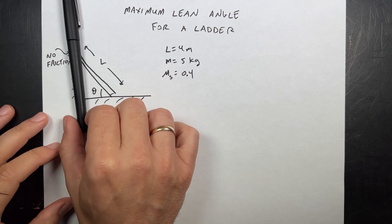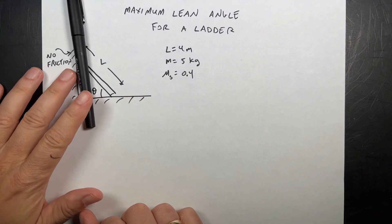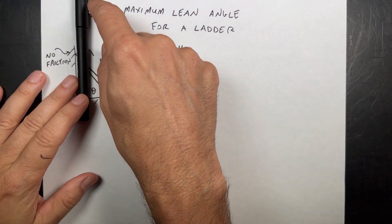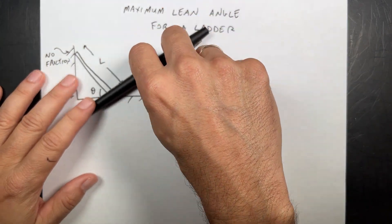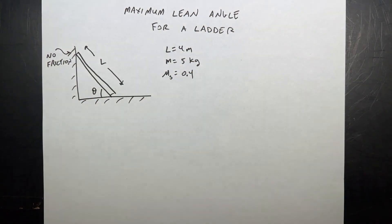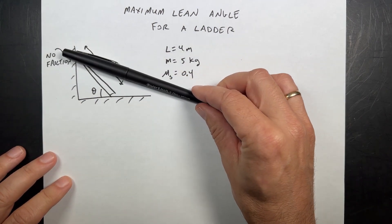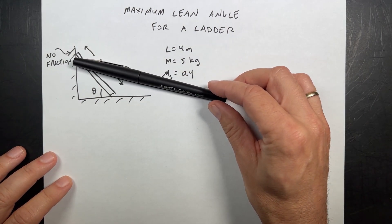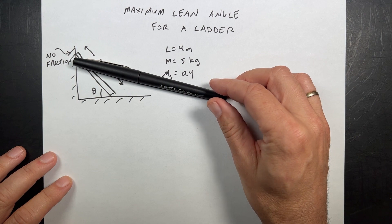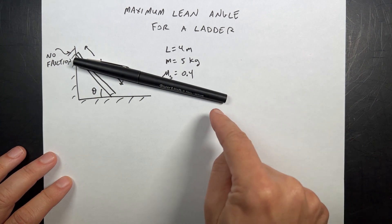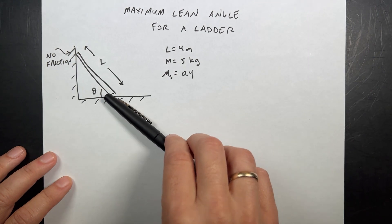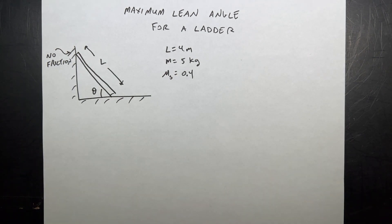Let's go to the extremes. If the ladder is nearly vertical, don't do that — once you start climbing, there will be a torque and you fall over, and that's bad. Also, if you get really low, a really low angle, it turns out the ladder is just going to slip down. So the question is: how far can you put it and have it not slip?